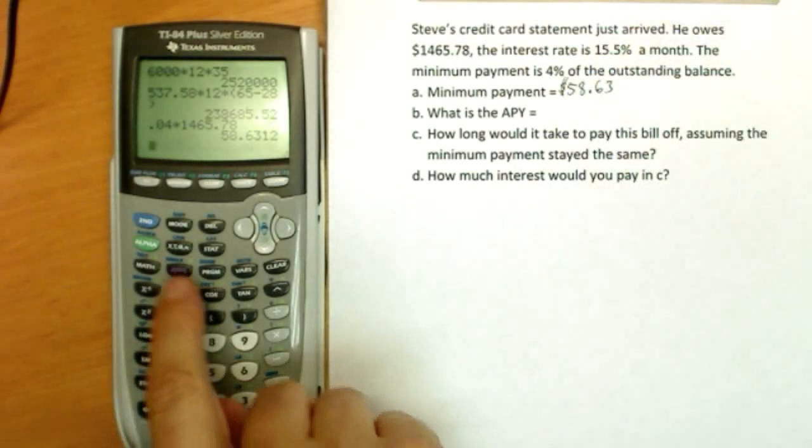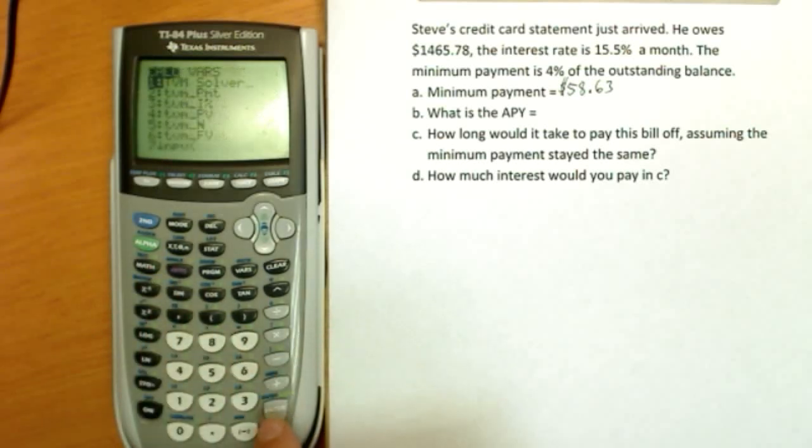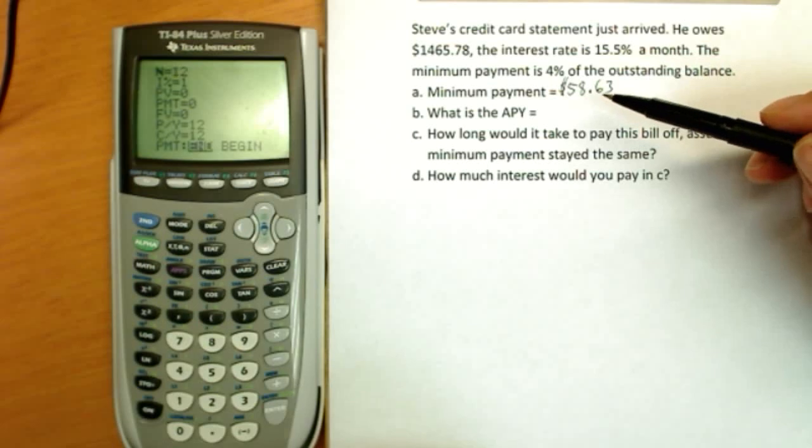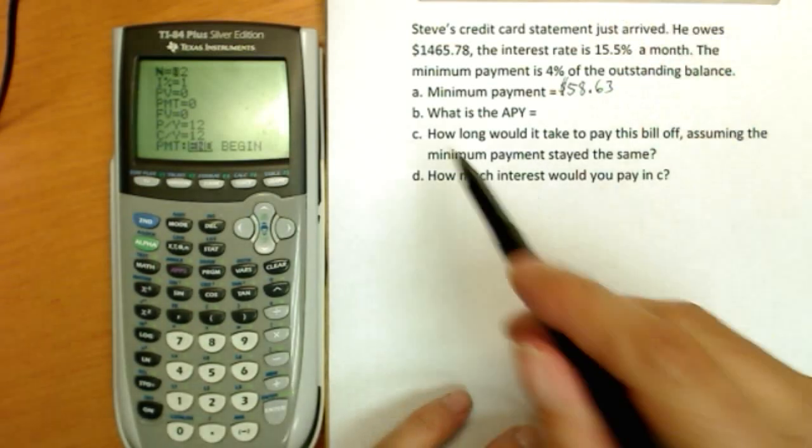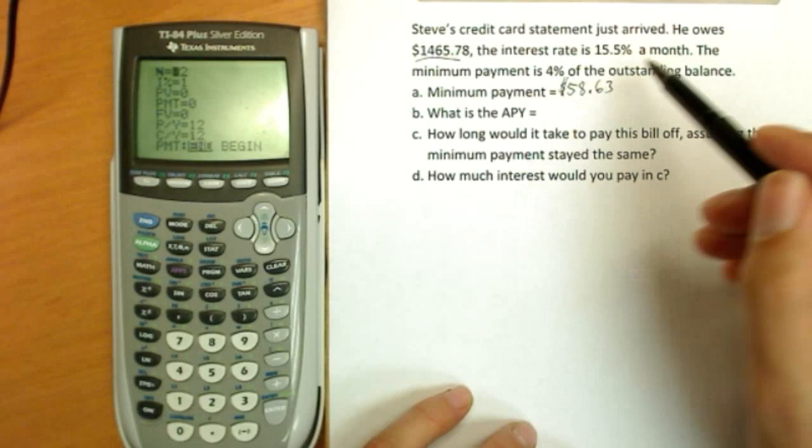Okay, what is the APY? Now we will enter the finance calculator. APY is a required government disclosure on most forms of credit. Here's the thing: APY doesn't really care what your balance is or your minimum payment or anything.